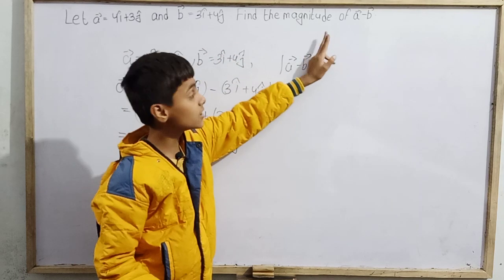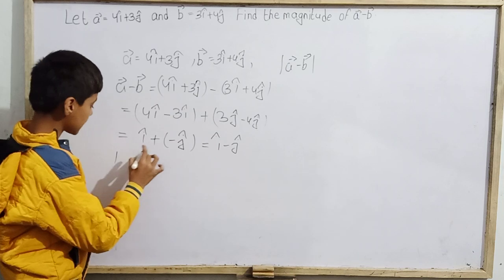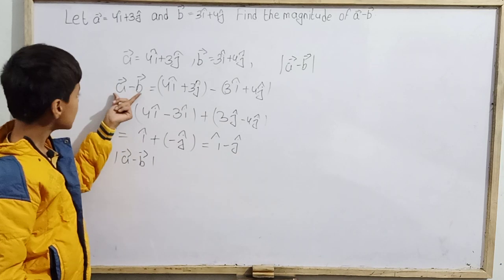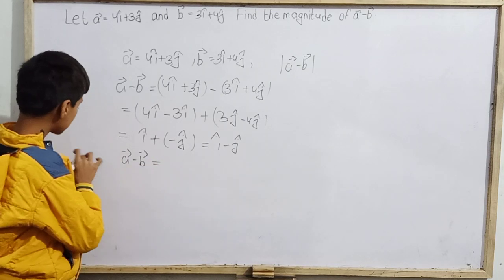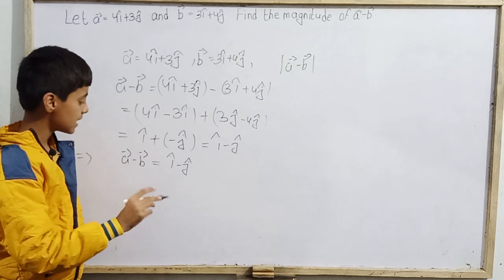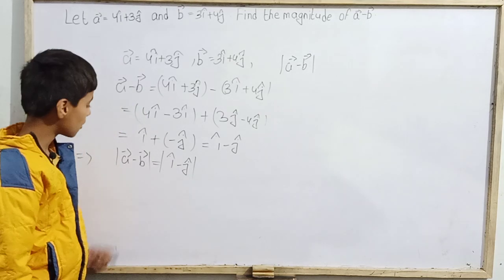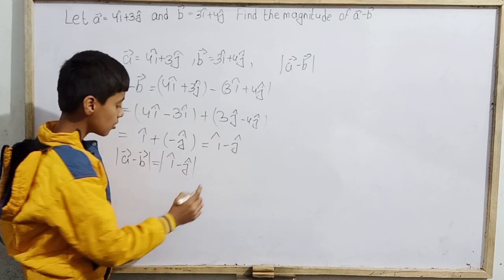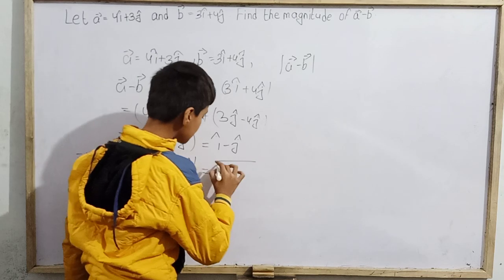The question asks for the magnitude of vector A minus vector B. Since vector A minus vector B equals i cap minus j cap, we now apply the magnitude. So the magnitude of vector A minus vector B equals the magnitude of i cap minus j cap.